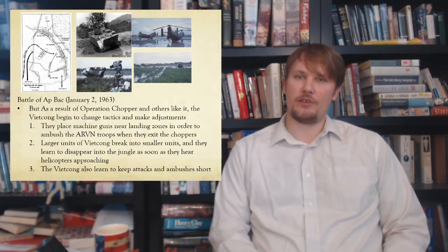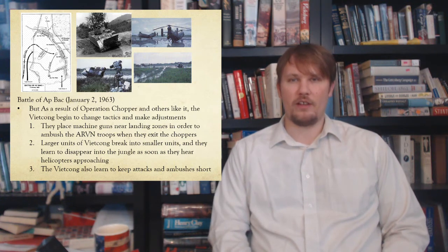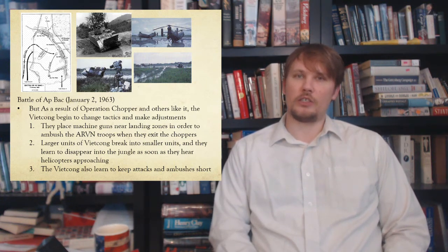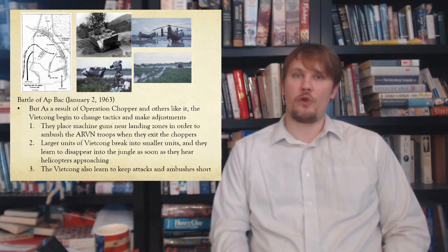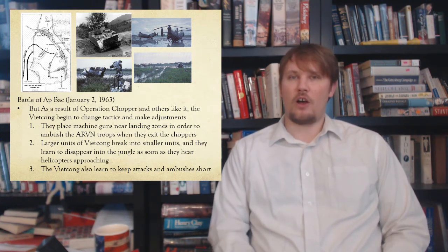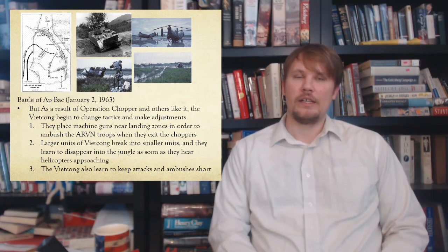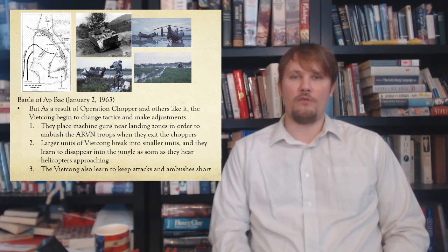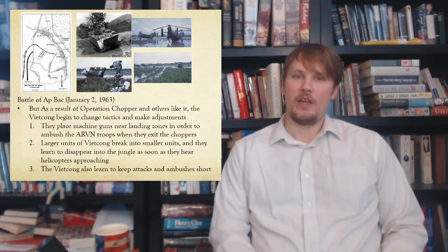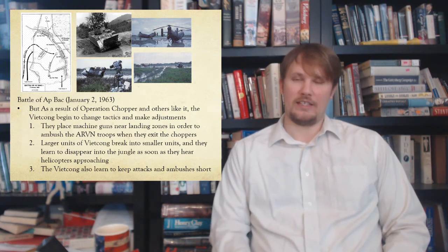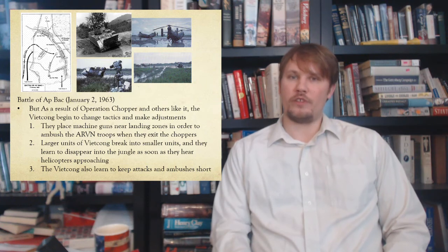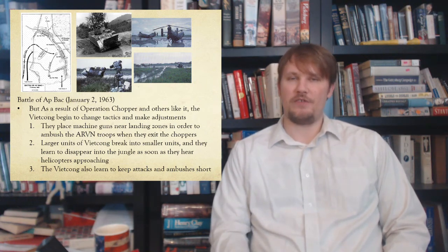The Viet Cong started placing machine guns near landing zones to ambush ARVN soldiers jumping from helicopters. Larger Viet Cong units learned to break into smaller units and disappear into the jungle as soon as they heard helicopters approaching. They also learned to keep attacks and ambushes short. These changes helped the Viet Cong avoid defeats like the one they faced at Operation Chopper. At the Battle of Ap Bac in January 1963, the Viet Cong set a trap for U.S. and ARVN forces — a terrible defeat where about 400 ARVN soldiers and three U.S. advisors were killed while only nine Viet Cong died.